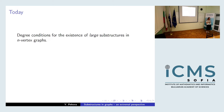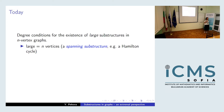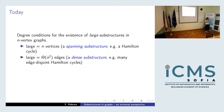A substructure can be spanning — covering all the vertices of the graph, for example a Hamilton cycle, which is a cycle traversing all vertices. Another way a substructure can be large is if it has quadratically many edges — what I call dense, meaning on the order of n² edges. For example, a collection of linearly many edge-disjoint Hamilton cycles.